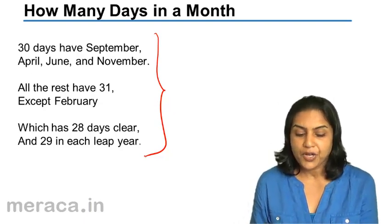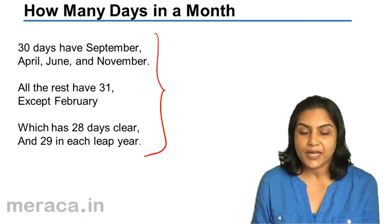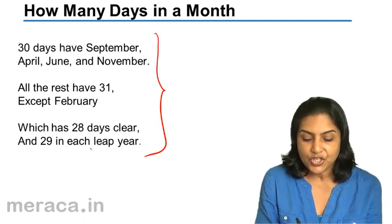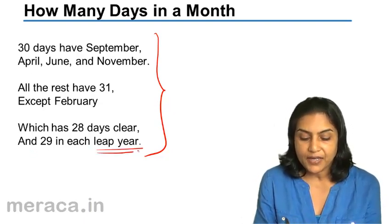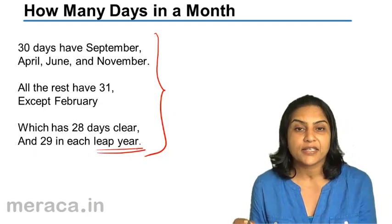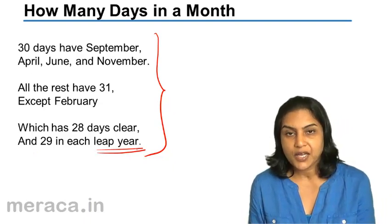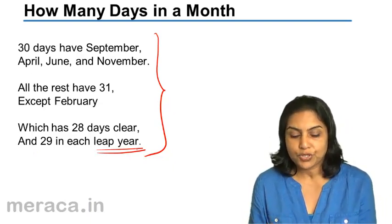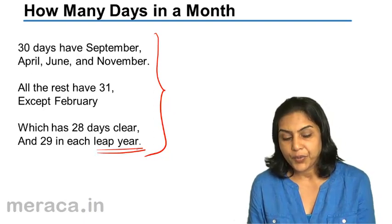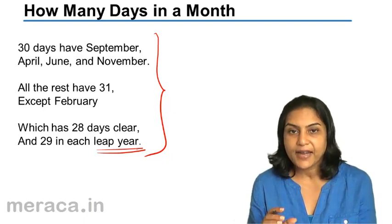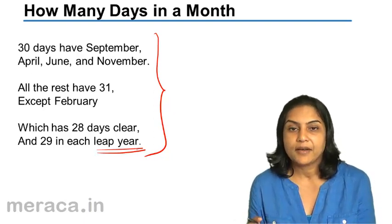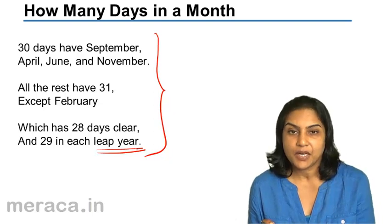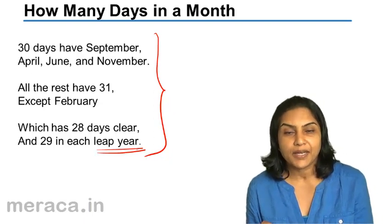So February only has 28 days, and 29 days in each leap year. A leap year arises every 4 years. In order to compute a leap year, we can divide the year by 4. If it is exactly divisible, it would be a leap year.